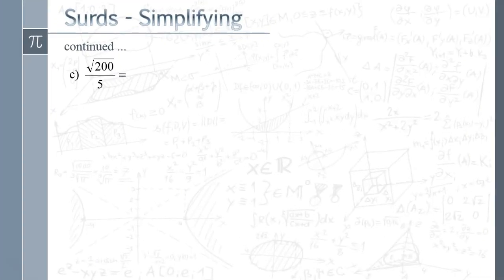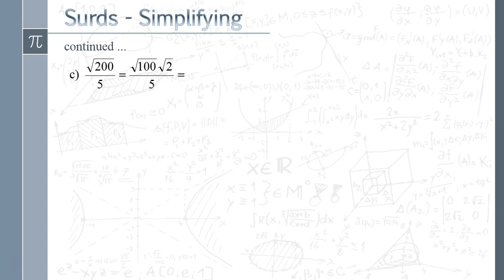On to example c where we've got a division. Again, because that 200 is underneath the square root we can't just simply do a divide by 5. What we're going to try and do is extract something from the square root and then do the cancelling. The easiest way to do that is to take the √200 and break it down to being √100 √2, so there's still got 5 on the bottom. Clearly square root of 100 is 10, so now that we've got that 10 outside the square root, now we can just do the 10 divided by 5, which equals 2√2.